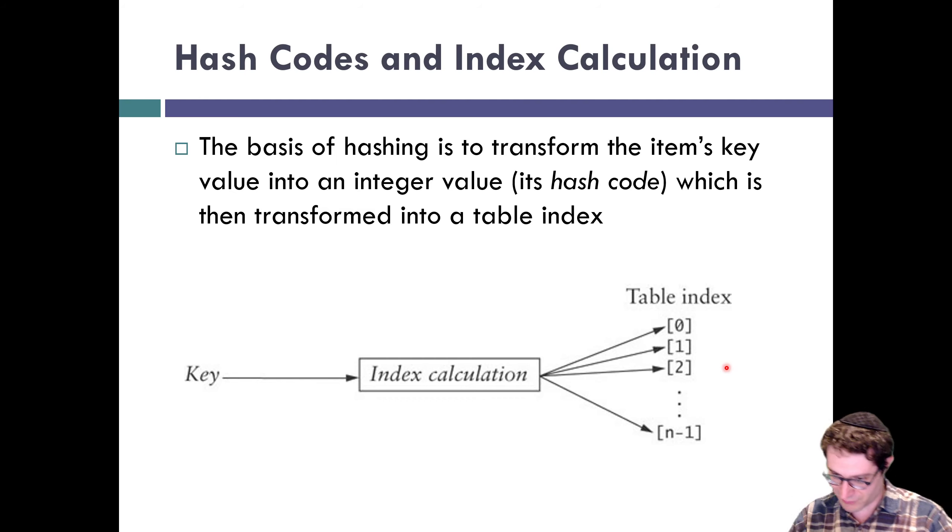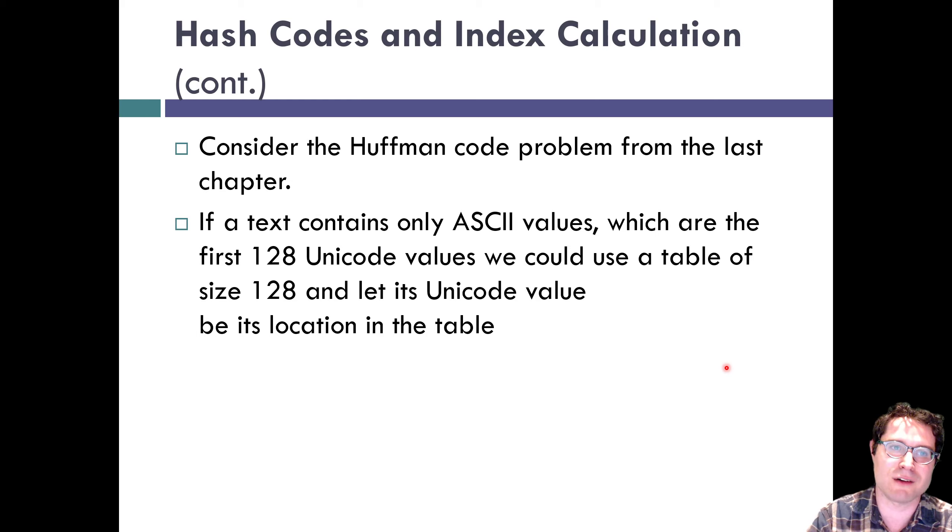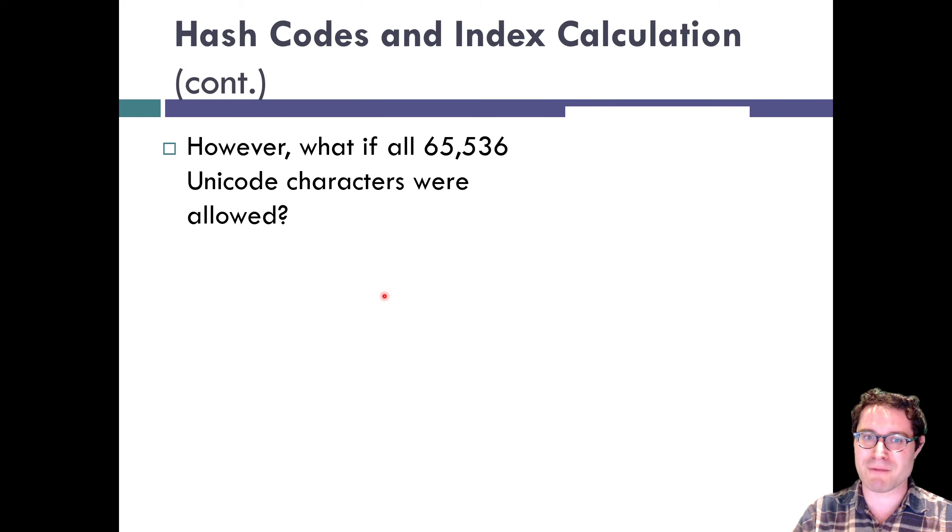Consider the Huffman codes we've looked at before. If we're just storing text that only has ASCII values, we could just use a table of size 128 like we were doing in the previous example and use its unicode value be the location of the table. It's almost like I knew this was coming up or something.